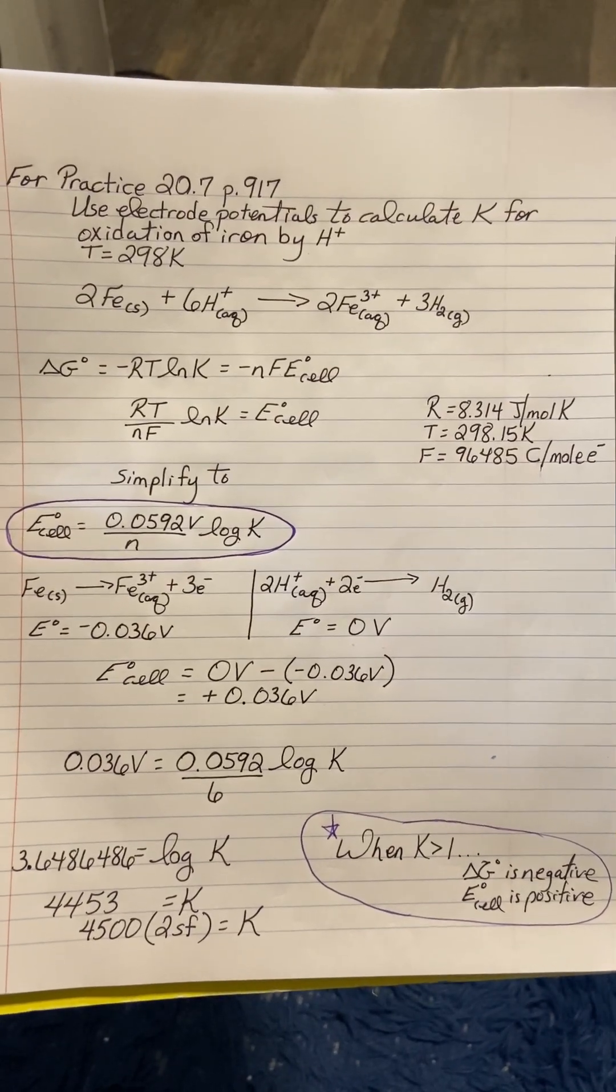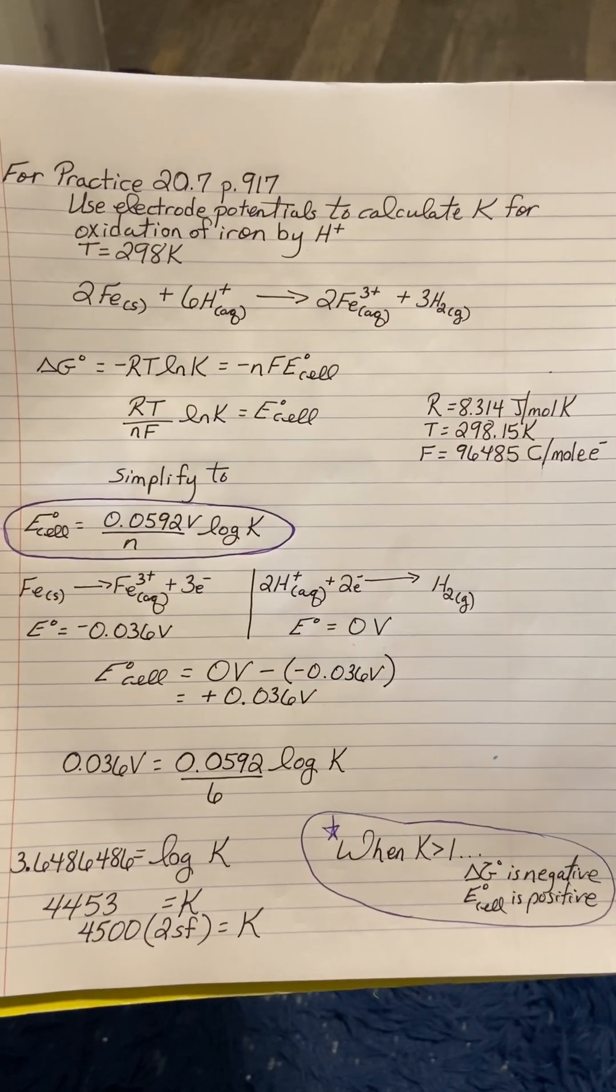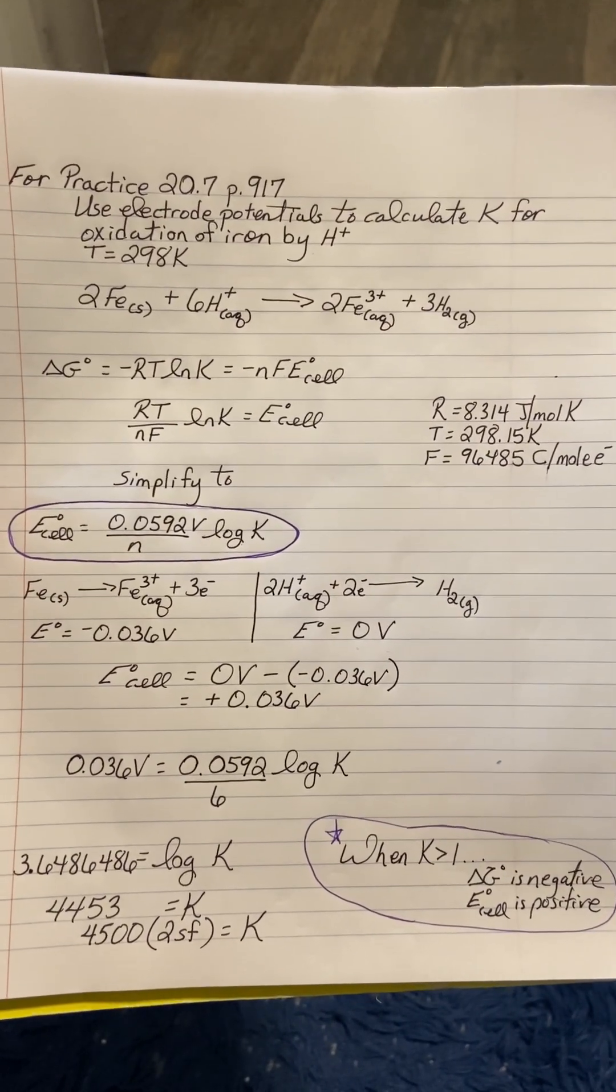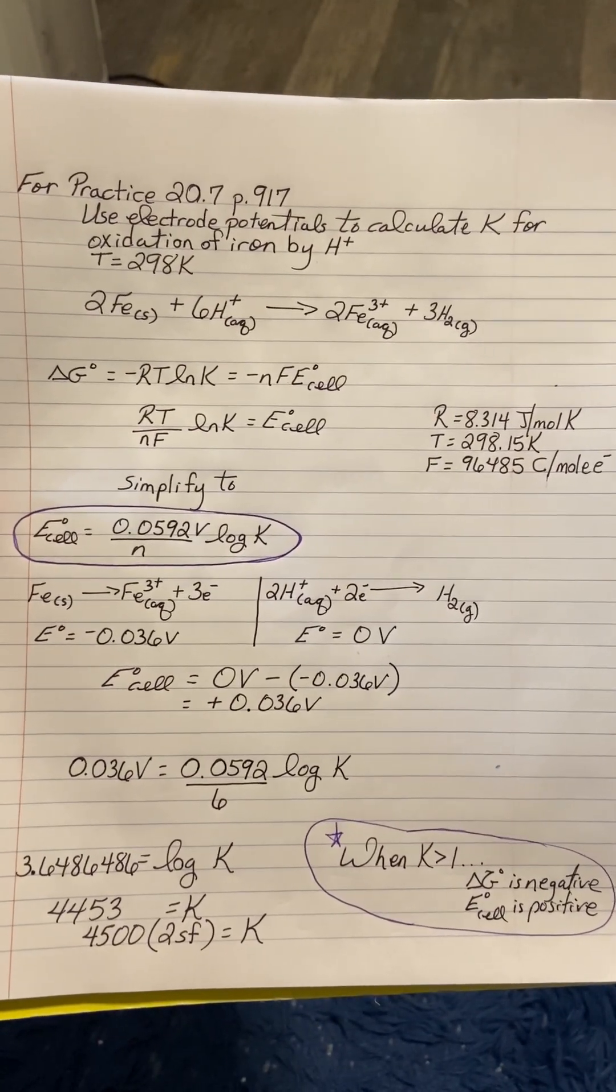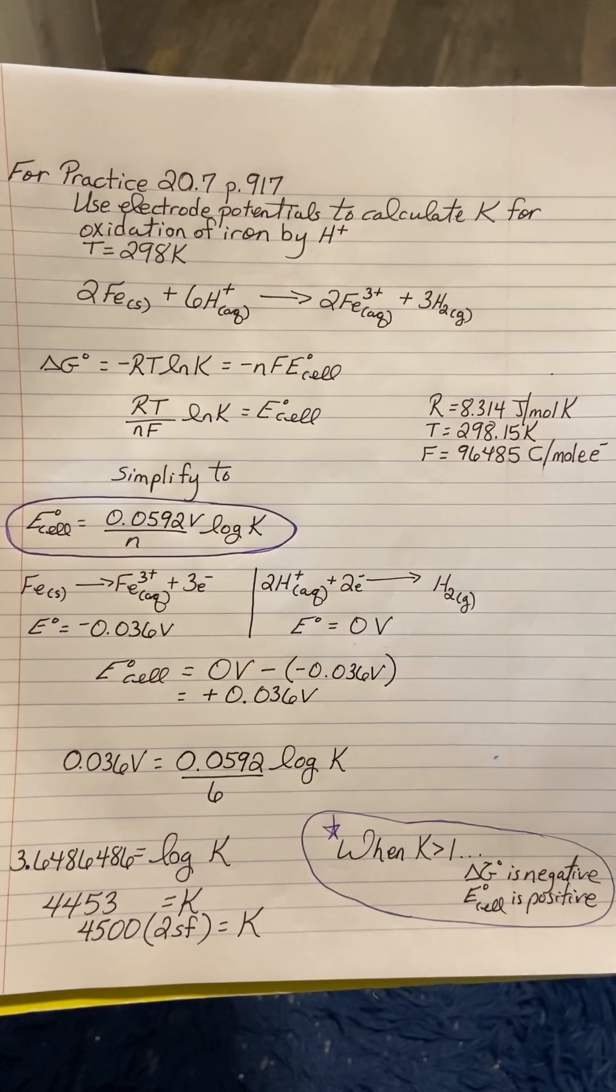We can get the reduction potential values from the table and we'll be able to find how many volts this redox reaction will generate.